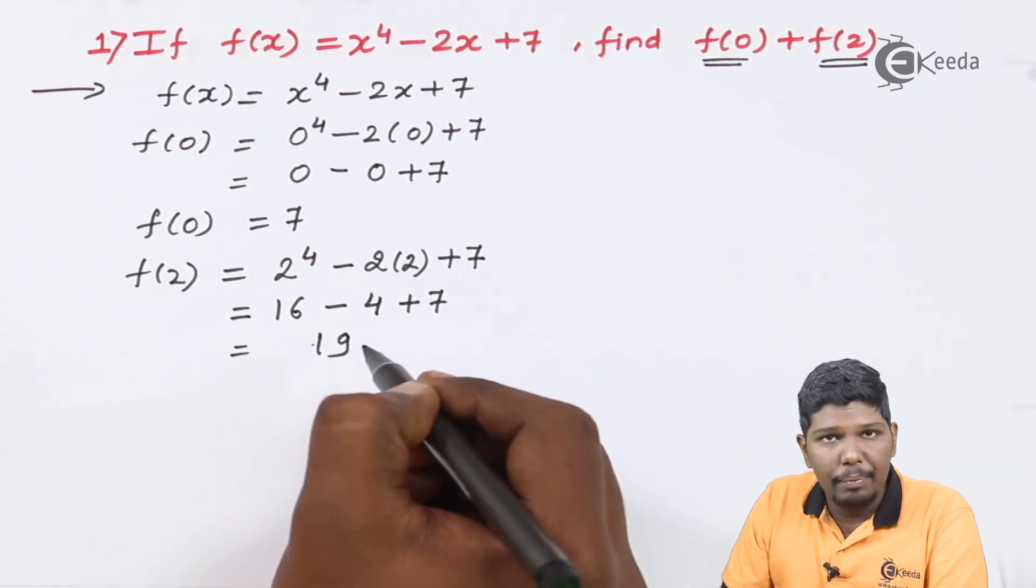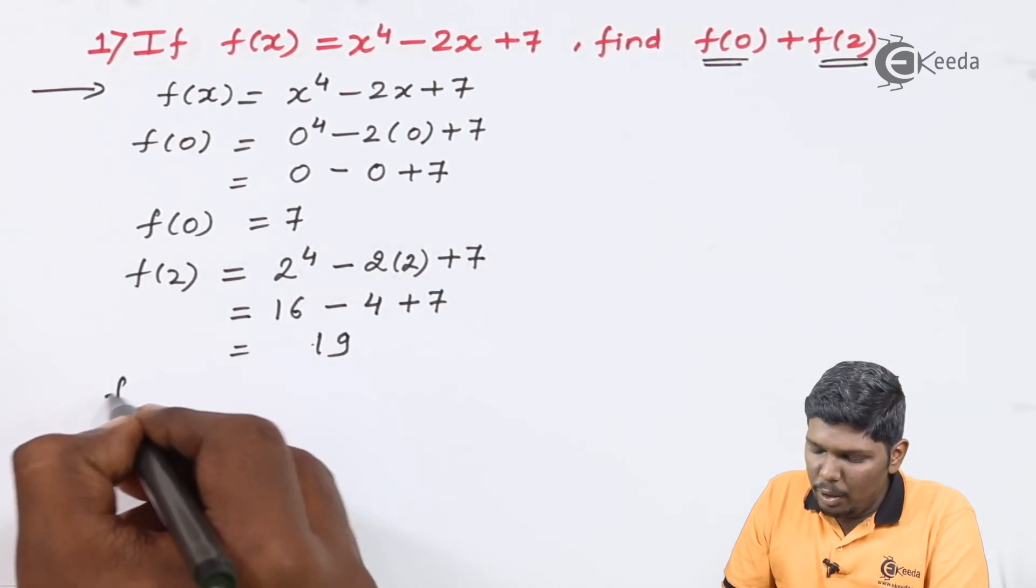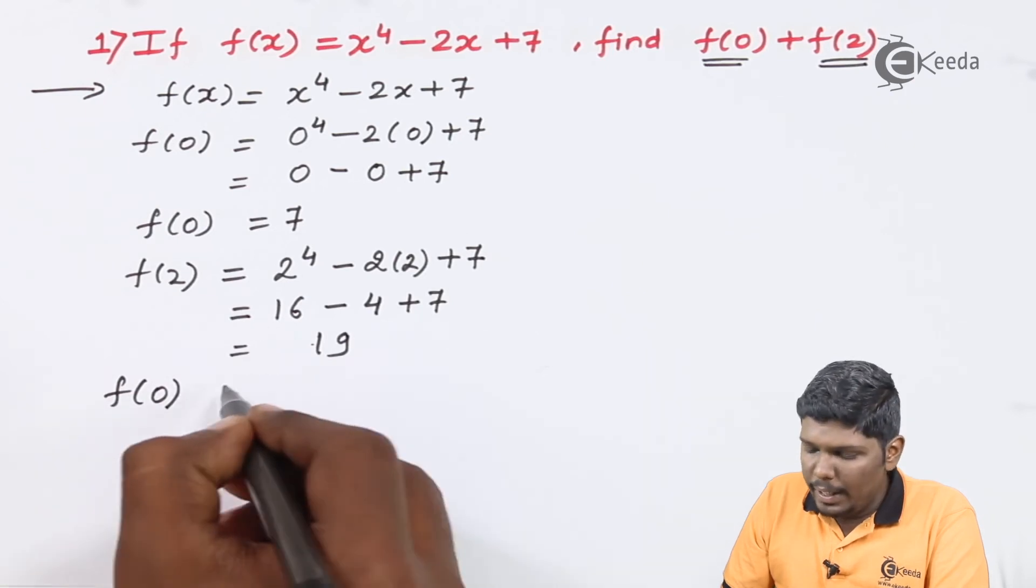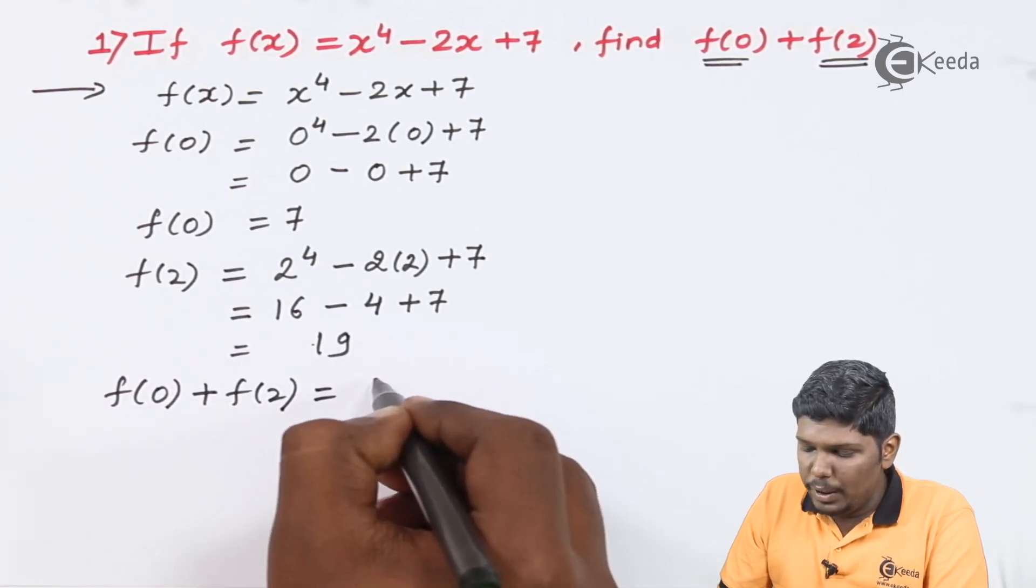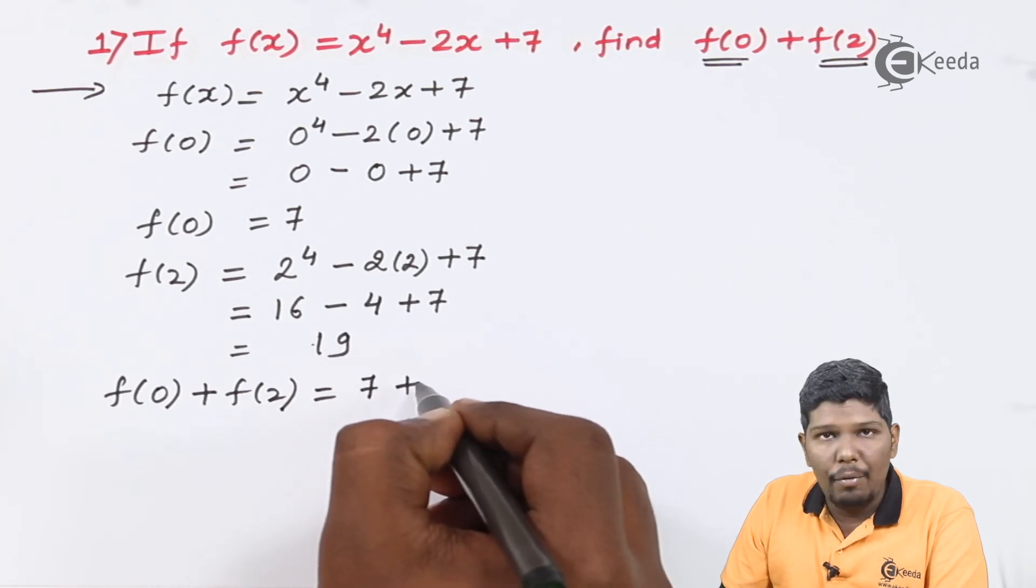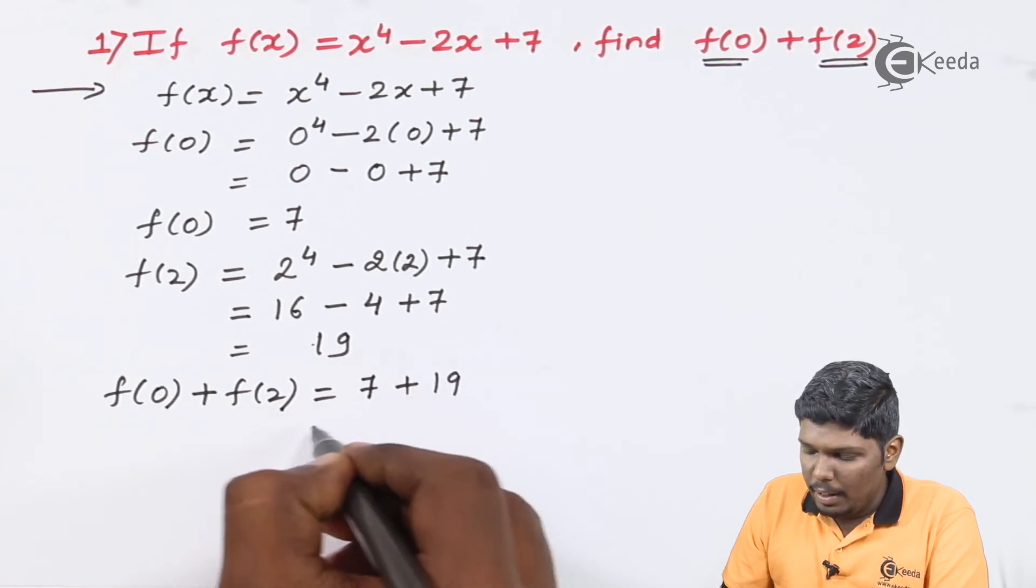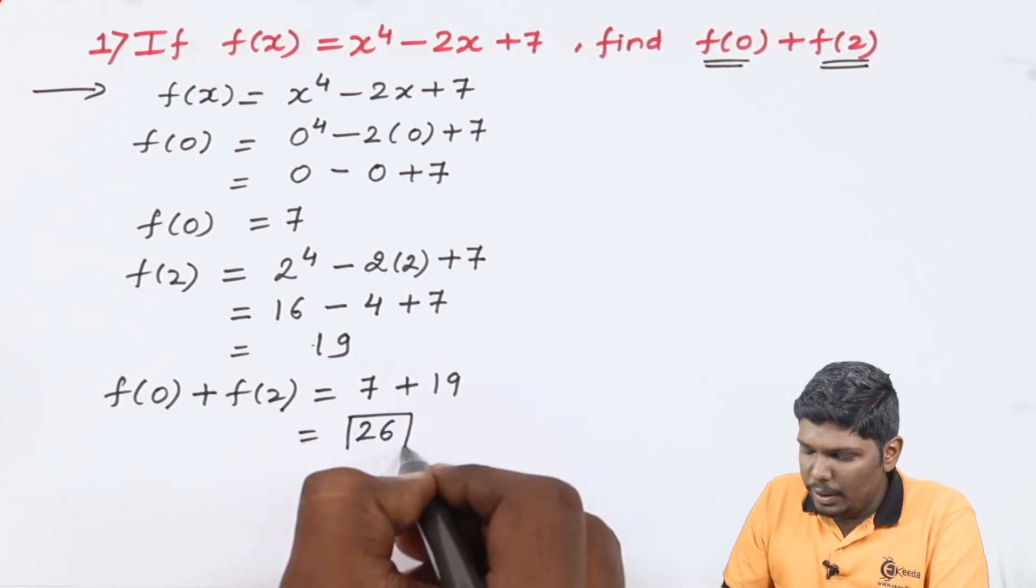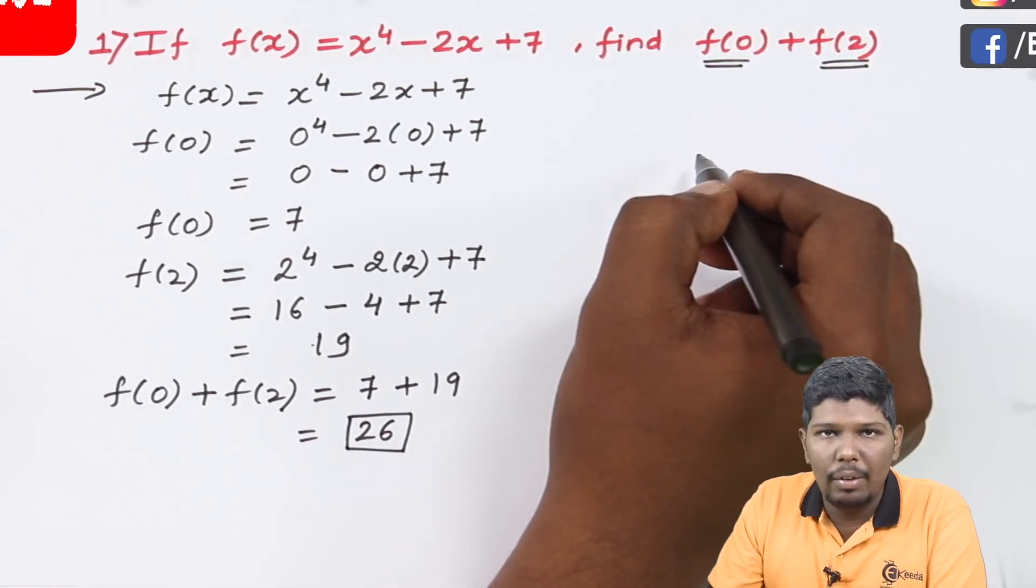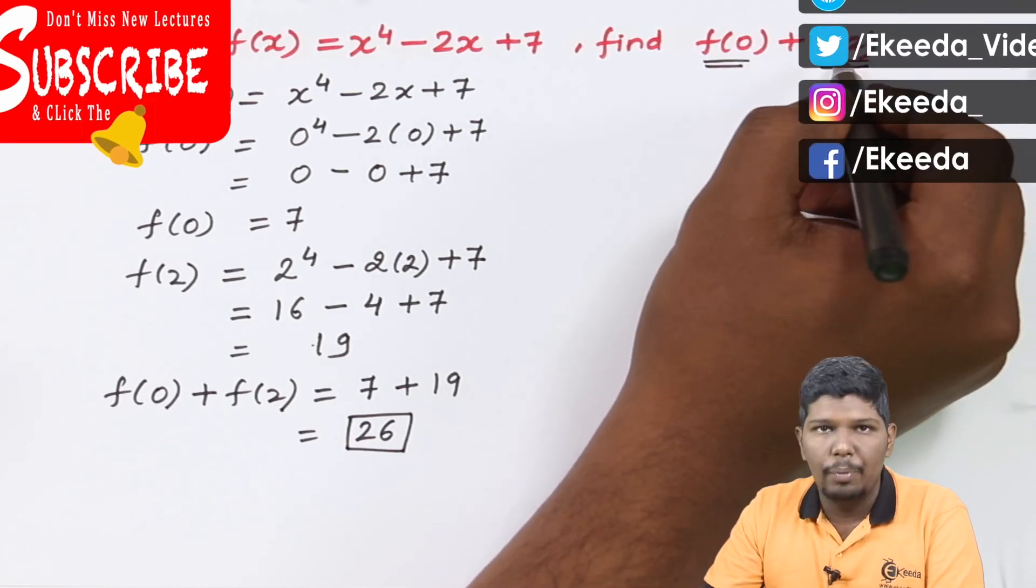Now we'll find the value of the given expression, so that is f(0) + f(2). So f(0) is 7 plus f(2) is 19. Now 7 plus 19 will give you 26. So this becomes the value for the given function at f(0) plus f(2).